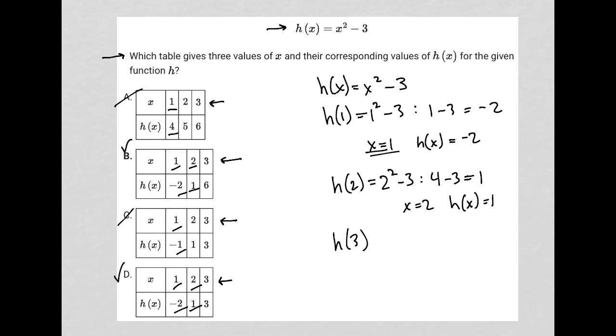h of 3 is equal to 3 squared minus 3, which is the same as 9 minus 3, which is simply equal to 6. So when x equals 3, h of x equals 6. And I see that that is happening here at choice B, not at choice D. So choice B is the correct answer.